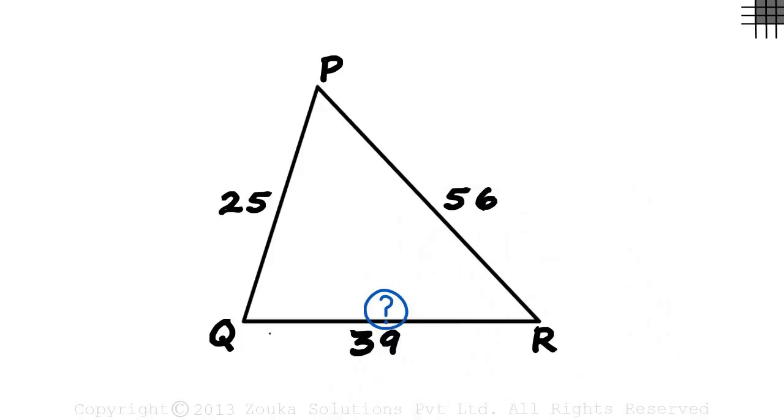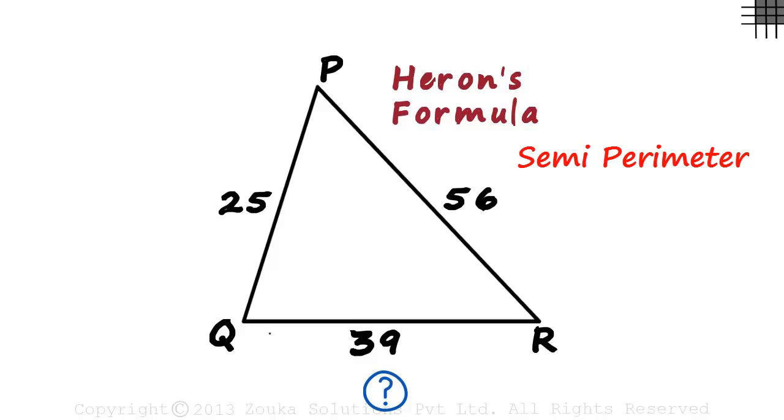We don't have the height or the base, but we have been given the length of all three sides. Since we have been given only the length of the sides, we know we have to use Heron's formula, and to use the formula, we need the semi-perimeter of the triangle.